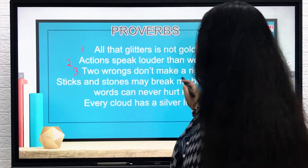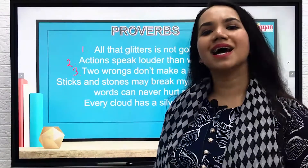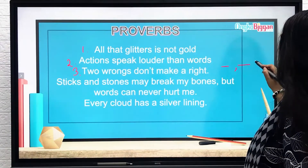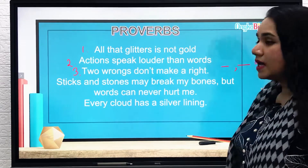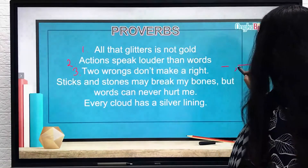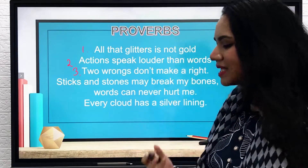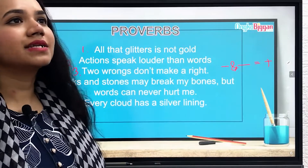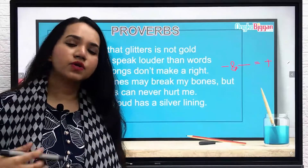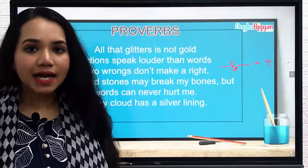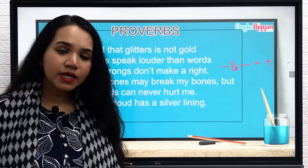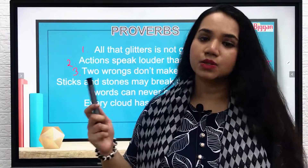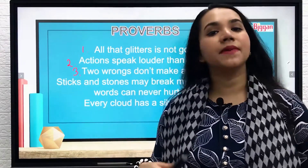Number three: 'two wrongs don't make a right.' In maths, we learned that minus and minus makes plus. But similarly, in reality, two wrongs don't make a right. If someone does something wrong to you and you do something bad back to that person, you might think you have done the right thing, but in reality all you've done is made a bigger mess.